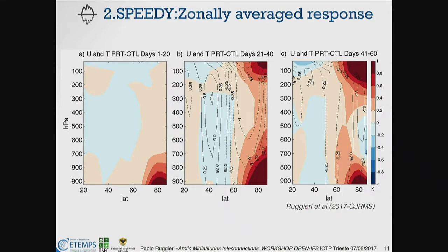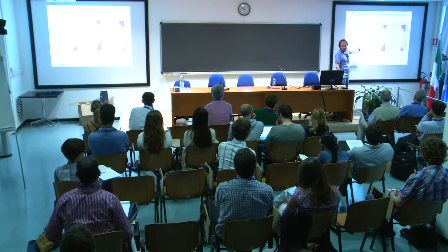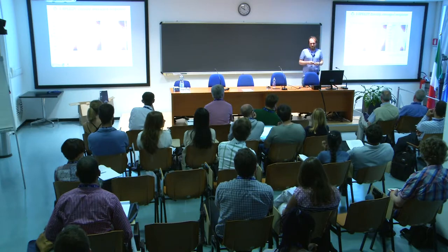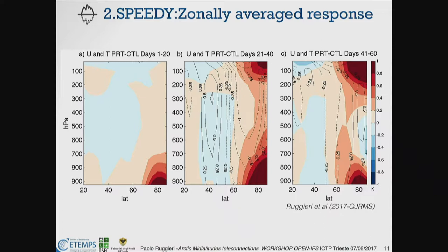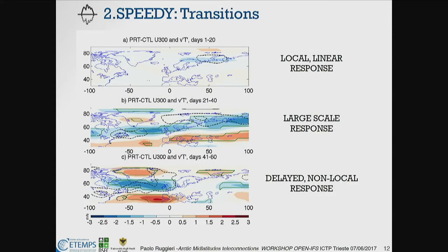In the response, in the first two or three weeks — here we see temperature in colours and zonal wind in contours — the response is shallow, confined in the Arctic, and essentially linear and thermodynamic. But it's interesting to see that after a while we observe an equatorward shift of the jet. We also see that the warming in the troposphere is still shallow and confined somehow, but warming is found also in the lower stratosphere, and it actually persists until the end of February. The signal is dominated by the stratosphere warming.